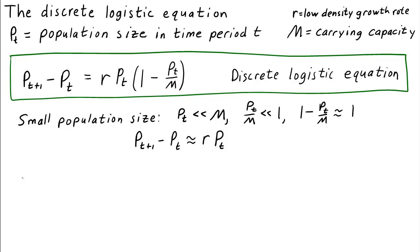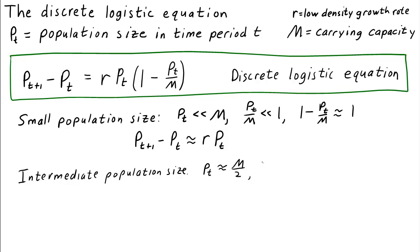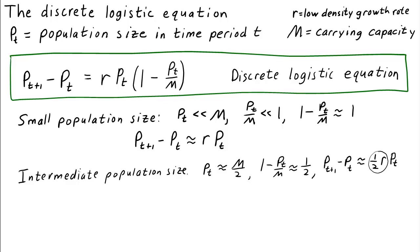However, as the population size grows, the growth rate slows down. For an intermediate population size — say p_t is about half the carrying capacity — the factor 1 minus p_t over m is about one-half. So the logistic equation looks like p_{t+1} minus p_t equals r times p_t times approximately one-half. The growth rate is basically reduced by one-half. The effect of the carrying capacity is to slow down the growth as the population size gets larger.